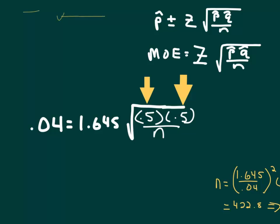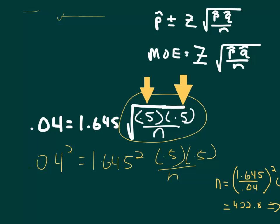One thing I'll say on the algebra is make sure, the first thing you ought to do in this, I believe, is just square everything, which would be, then we have 0.04 squared is equal to 1.645 squared, and then just 0.5, 0.5 over n. So when you're squaring this part, just take the square root sign away.